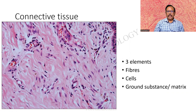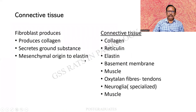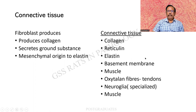So, this is the connective tissue — just a recall. I am finding the slender fibroblast, bundles of collagen, and in some areas a vague matrix or ground substance. The fibroblast produces the collagen and also secretes the ground substance, and it can be of mesenchymal origin to elastin. When we say connective tissue, it means collagen, reticulin, elastin, basement membrane — particularly in tissues such as the kidney — then muscle, oxytalan fibres or tendons, and neuroglia which are specialized.